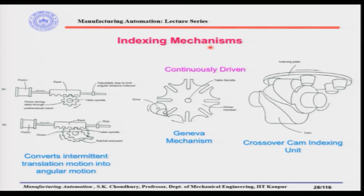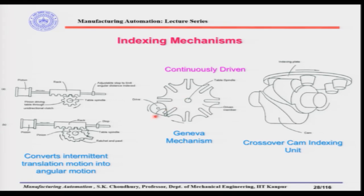Indexing mechanisms have a tendency to index and stop, and for that purpose indexing mechanisms are used. One of the most popular is the Geneva mechanism. In the Geneva mechanism, the driver continuously rotates, and the pin driven by the driver goes inside a groove and comes back. While going and coming back, the Geneva mechanism is not moving — it only moves when the pin goes through the groove and comes out again. In one full rotation of the driven member, it will index and stop.